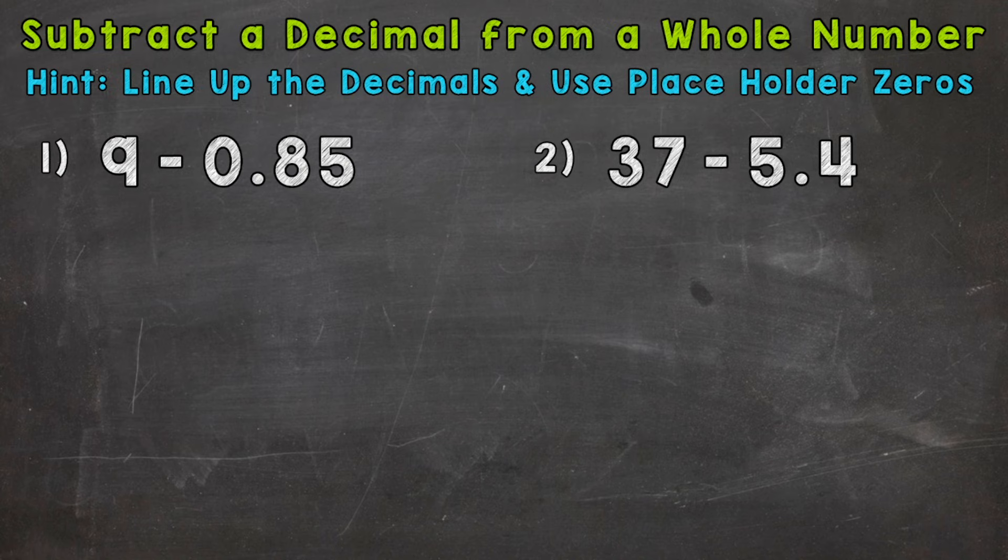So let's jump into the two examples that we're going to go through together in order to get this down. For number one, we have nine minus 85 hundredths.